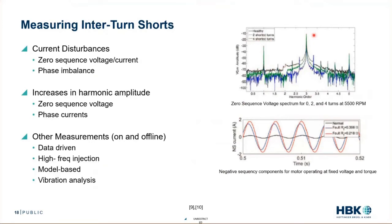We have some really good indicators and multiple indicators that show us a failure is happening. And if we have enough of these, we can start to identify why that failure is happening and where that failure is happening. This might tell me I have a turn-to-turn short. This and this might tell me I have a turn-to-turn short in phase one.